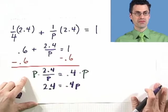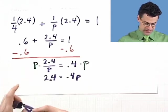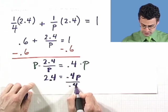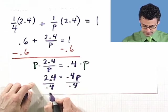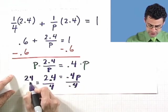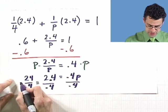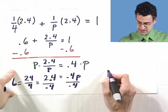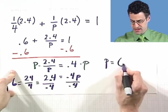And if I want to now solve this for P, I just divide both sides by 0.4. And 2.4 divided by 0.4 is the same thing as 24 divided by 4, which equals 6. And so I see that P equals 6.